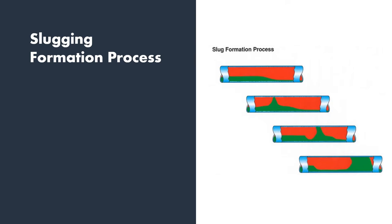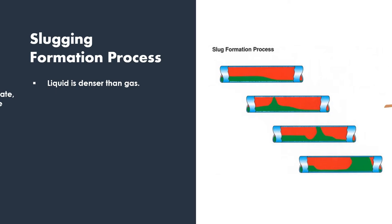A recap of the slug formation process in horizontal pipelines. Liquid is denser than gas, so at low velocities, liquid settles at the bottom and gas stays at the top.